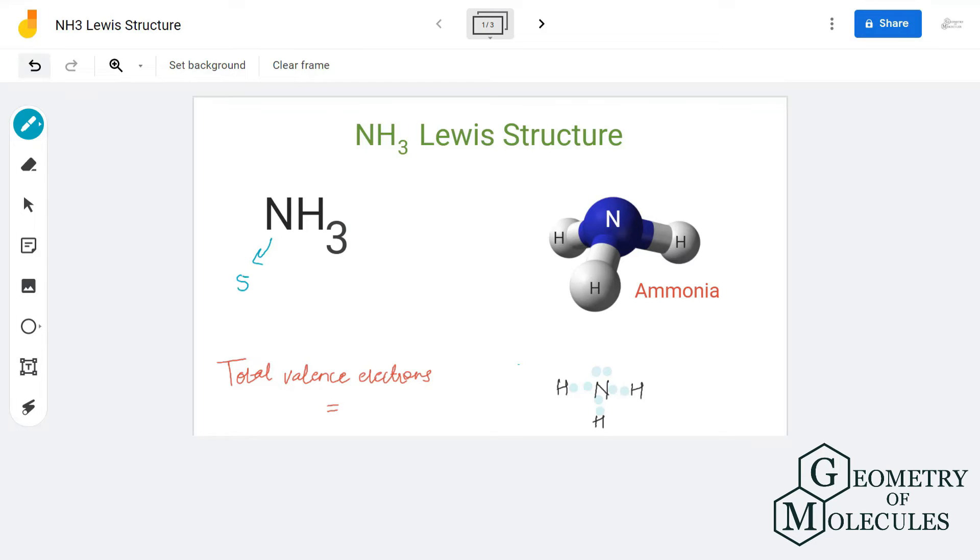Nitrogen is a group 15 element and has five valence electrons, whereas hydrogen has one valence electron. In total, there are eight valence electrons for ammonia.